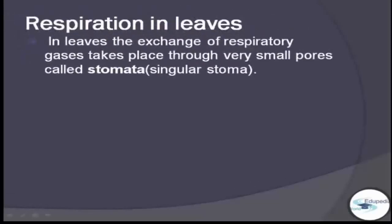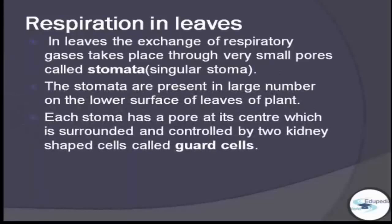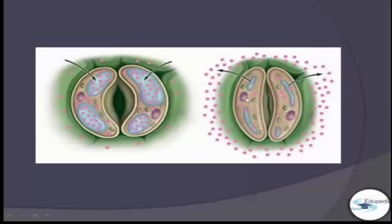Respiration can be processed in leaves, stems, and roots. In leaves, the exchange of respiratory gases takes place through very small pores called stomata, or singular stoma. Stomata are present in large numbers on the lower surface of plant leaves. Each stoma has a pore at its center, surrounded and controlled by two kidney-shaped cells called guard cells. When the stoma opens, exchange of gases takes place between the atmosphere and the interior of the leaf by the process of diffusion.